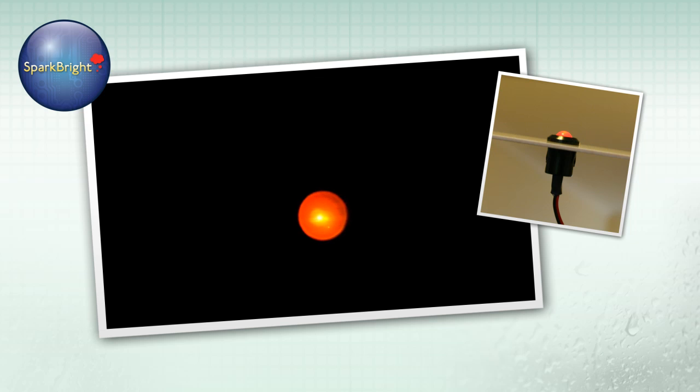The big advantage of the Eclipse over any other product is that it's light reactive and auto dimming. There's no separate sensor and there's no connection into your vehicle's lighting circuit. It's a simple two wire connection to positive and negative.